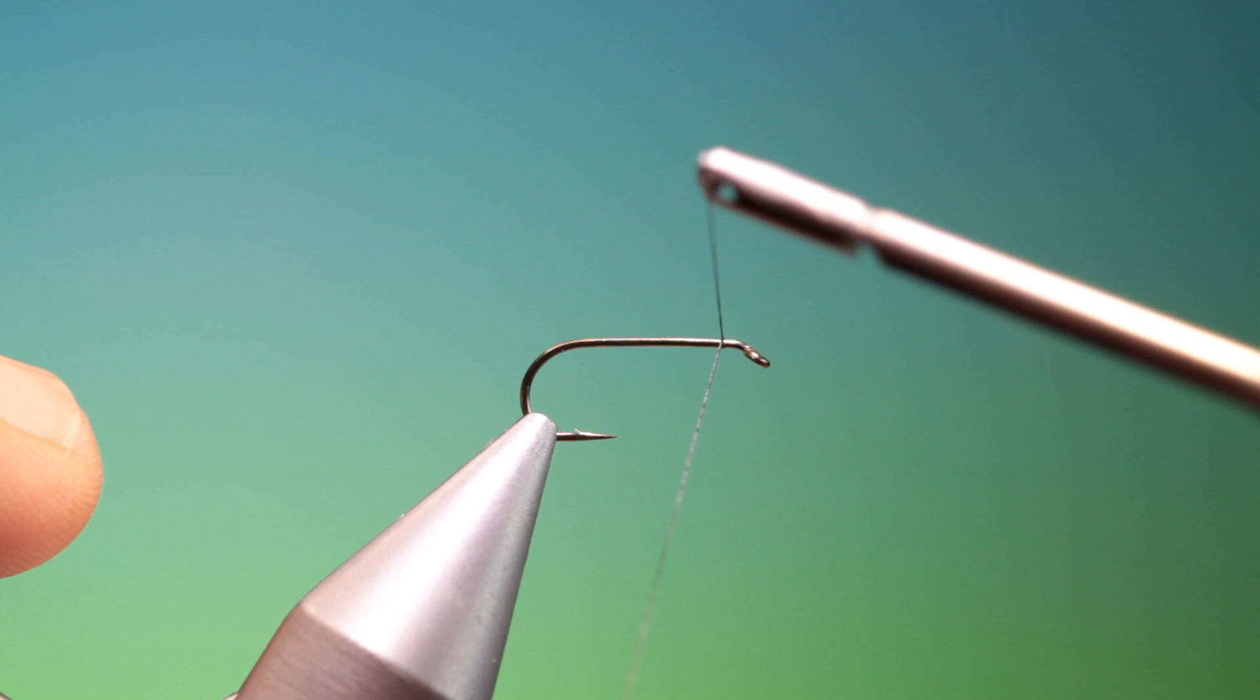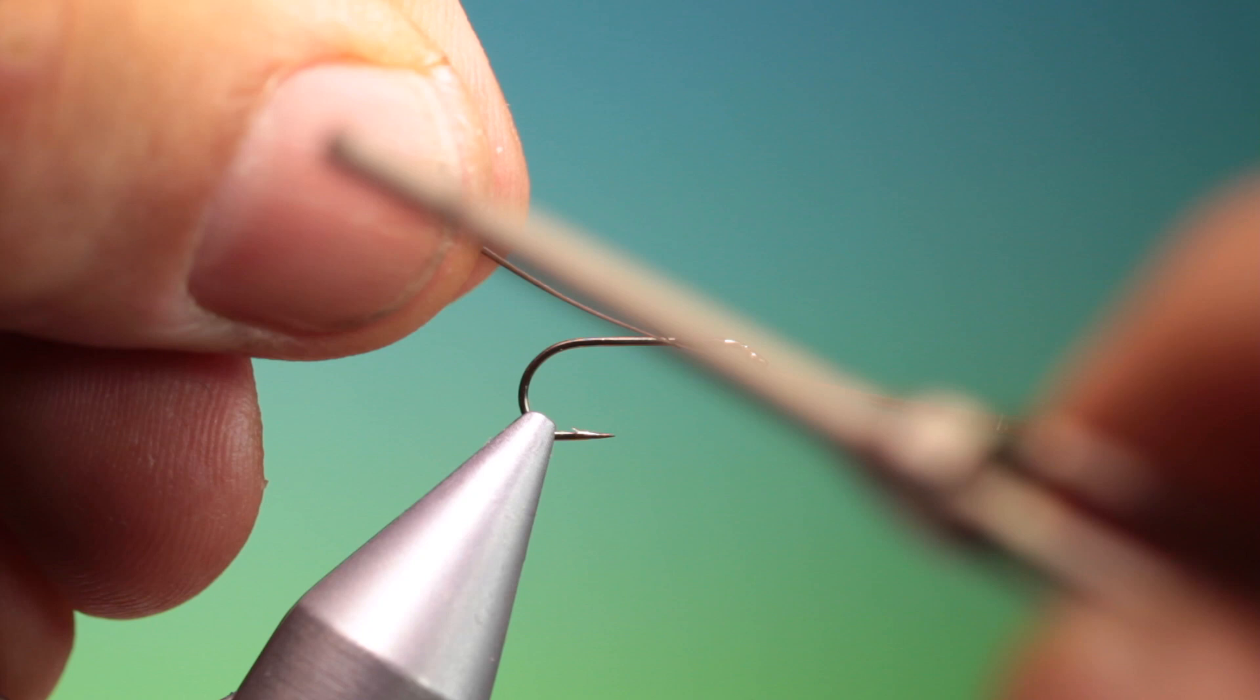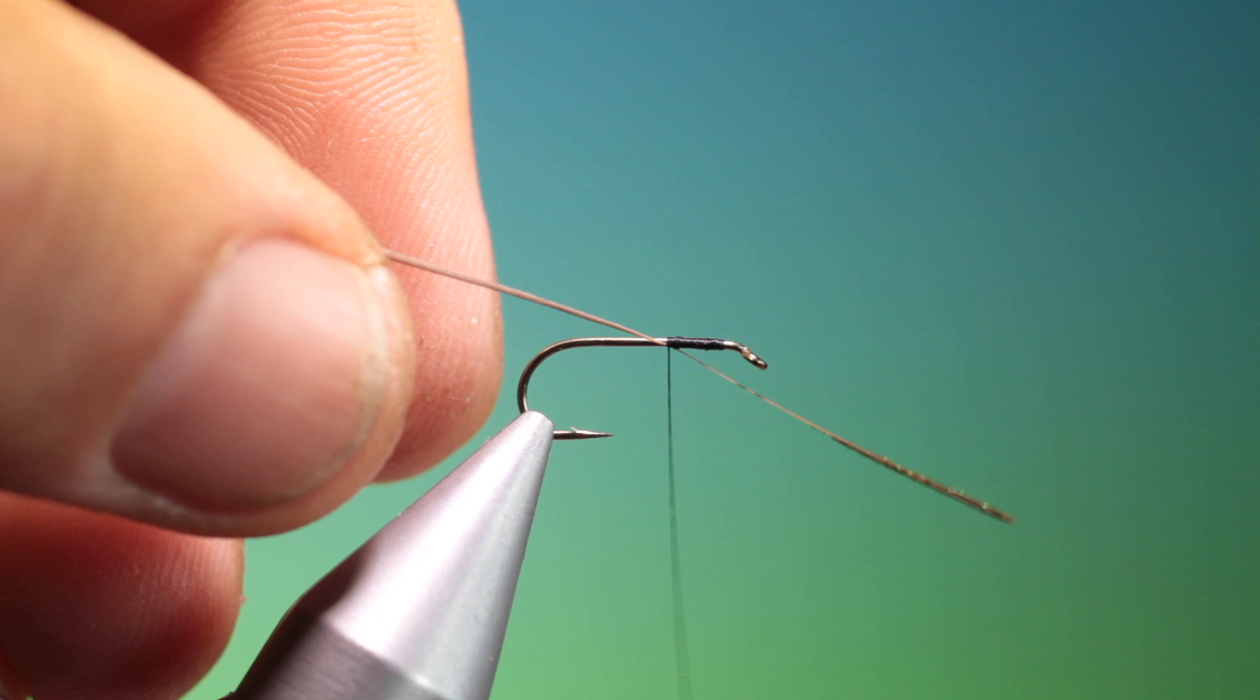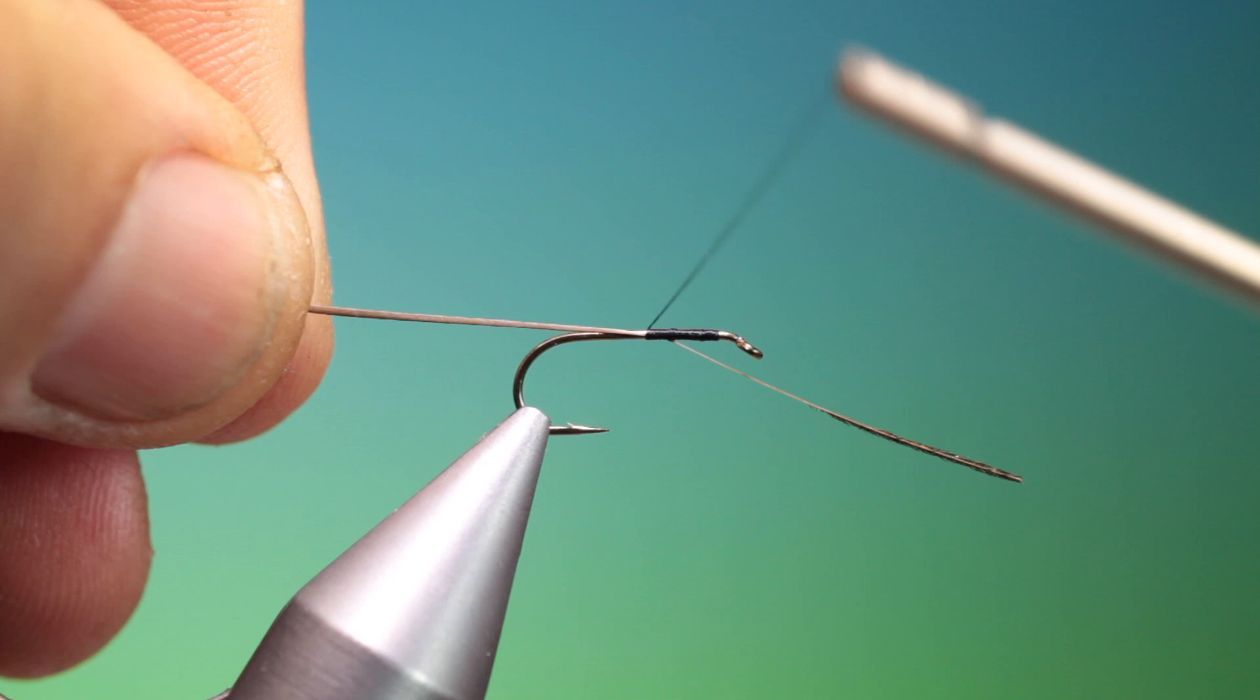We just put a small amount of black tying thread to about there. Then we need a natural stripped peacock quill and we'll just attach this. We want a nice slender body on this, so nice neat turns because this will be the underbody.